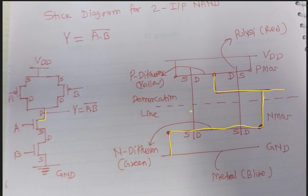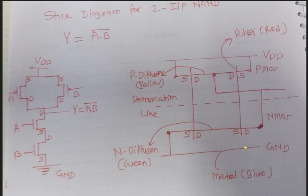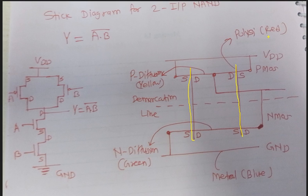That is why the nomenclature of source and drain terminals is important when drawing a stick diagram. We also need to show the demarcation line, the n-diffusion layer, and the p-diffusion layer. Power supply and ground are metal, drawn in blue. N-diffusion is green, p-diffusion is yellow, and polysilicon is drawn in red.